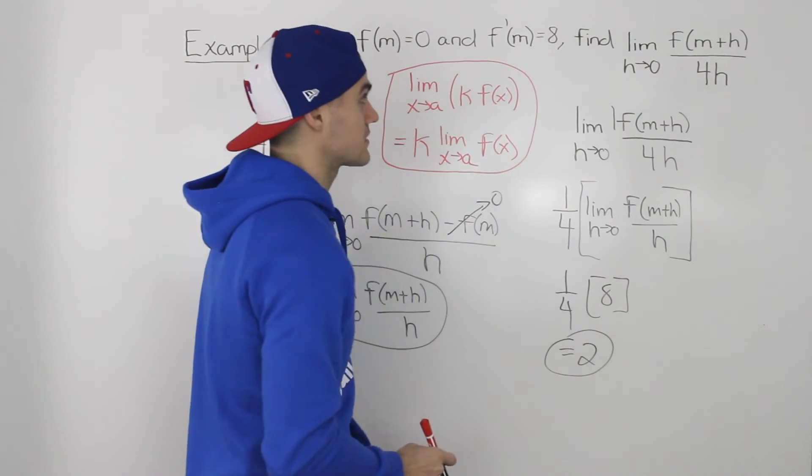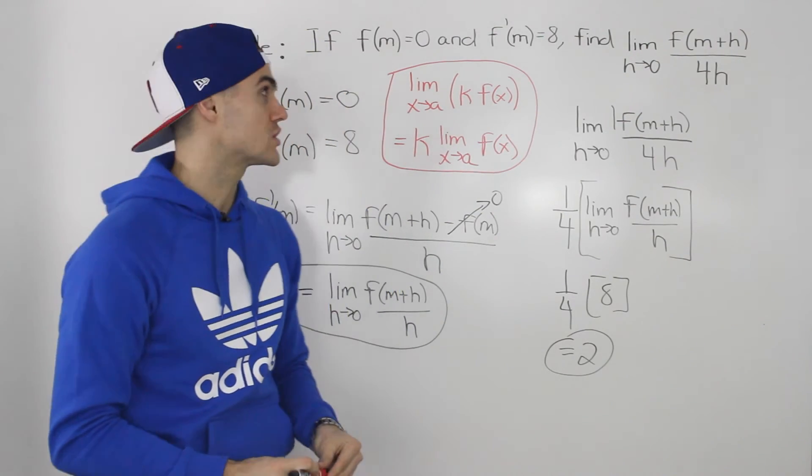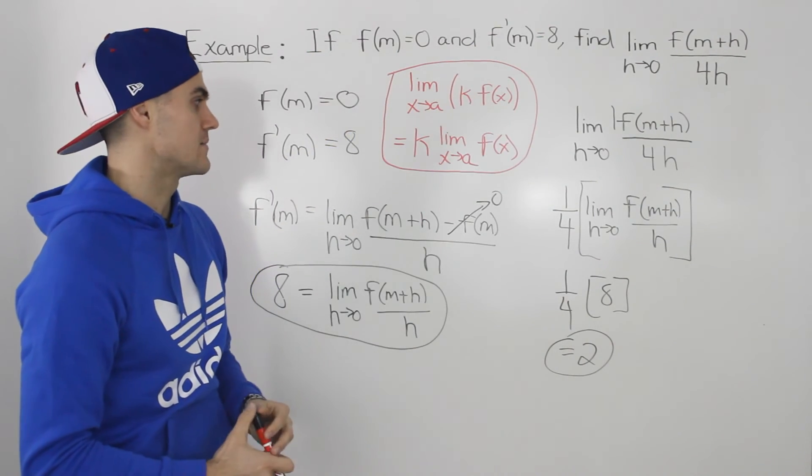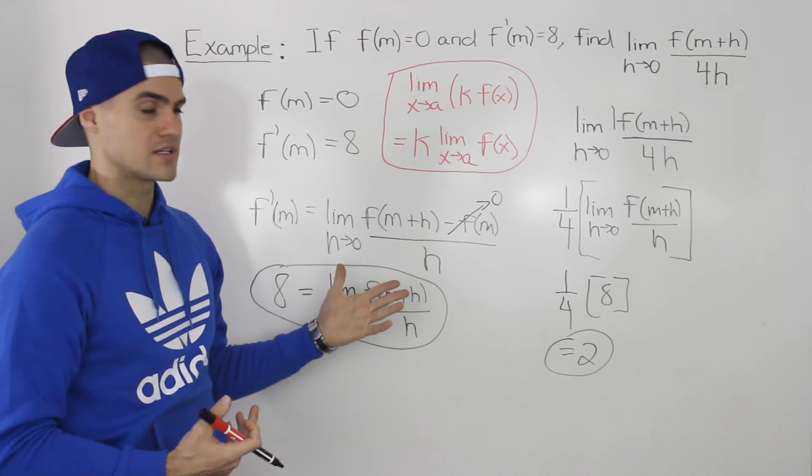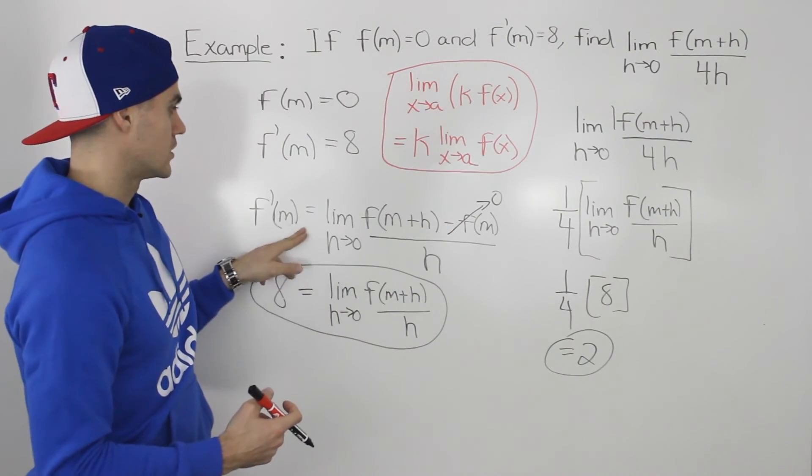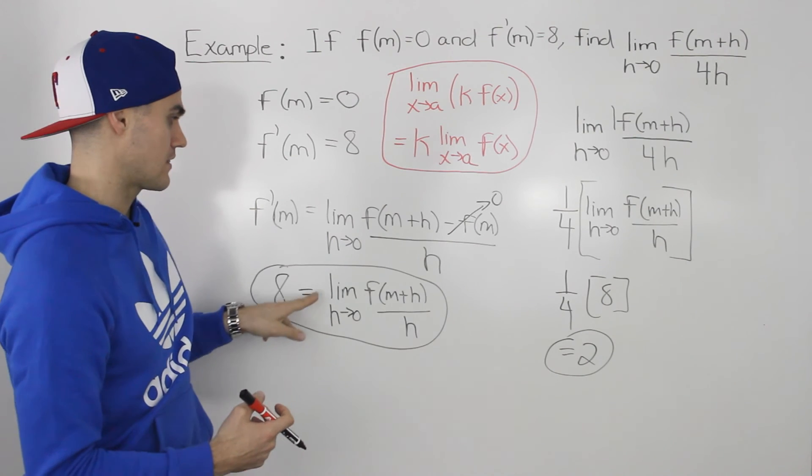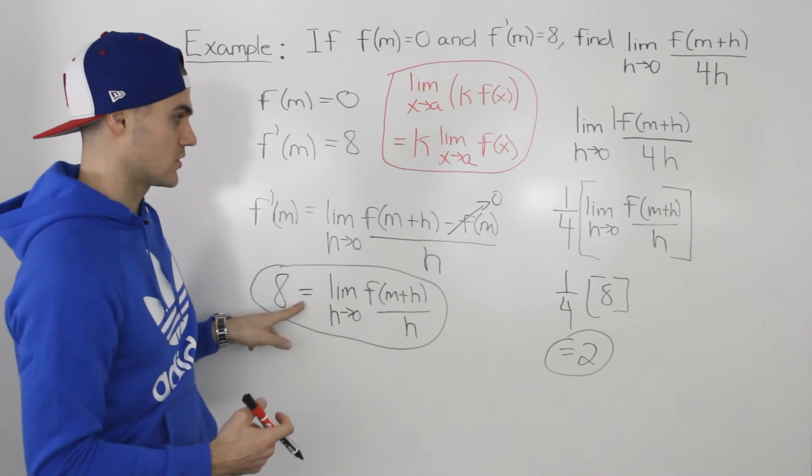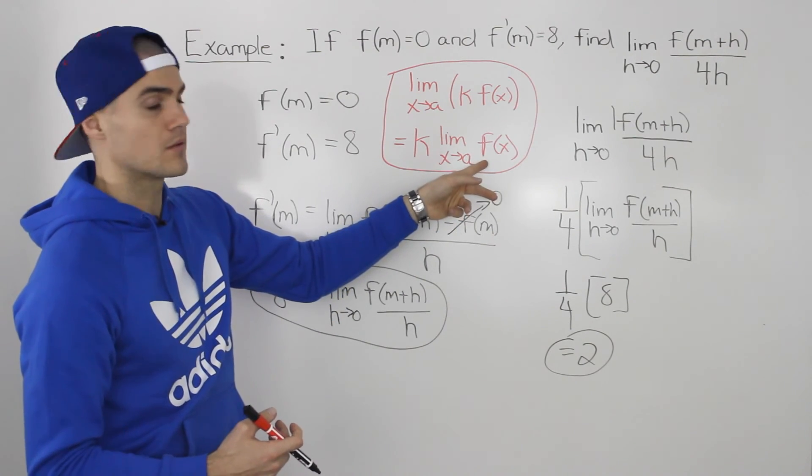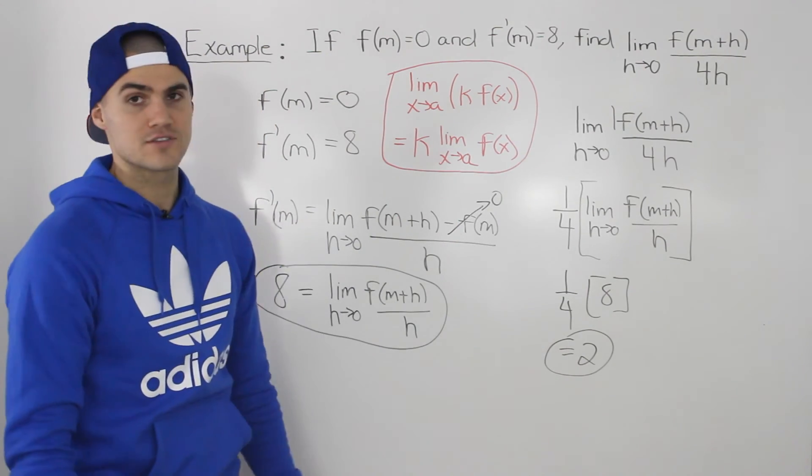So that there is our final answer for the limit as h approaches 0 of f of m plus h all over 4h, given that f of m is equal to 0 and f prime m is equal to 8. So again, algebra was pretty simple, but it's just recognizing that you have to take that f prime m, show it through the definition of a derivative, and then that f of m is going to go to 0, and then that remaining expression is going to equal 8, and then you plug in that remaining expression after you use the properties of limits to take that constant of 1 over 4 out, and you get that final answer of 2.